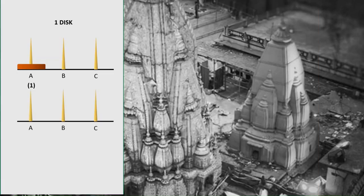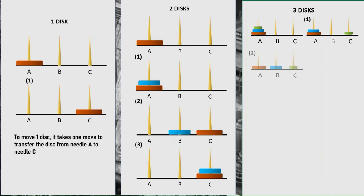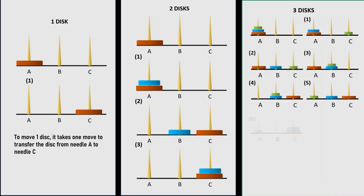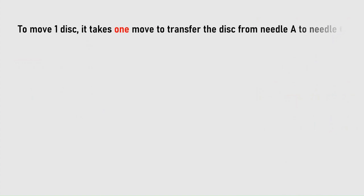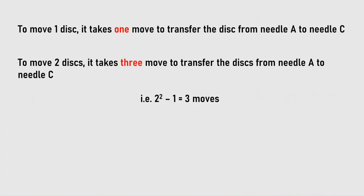It takes one move for one disc to be moved to rod C. Paranthu, 2 chakroun ko chhad C tuk le jane ke liye 3 katham lagtet hai. Vaisahe 3 chakroun ke liye 7 katham. So it takes 2 raised to the power N minus 1 to move N discs.